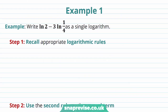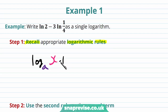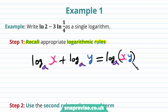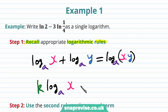Let's take a look at some examples. Our first example asks us to write ln of 2 minus 3 ln of 1 quarter as a single logarithm. Our first step is to recall appropriate logarithmic rules. We're going to need the log base a of x plus the log base a of y is equal to the log base a of x times y, and we'll also need that k multiplied by the log base a of x is equal to the log base a of x to the power of k.